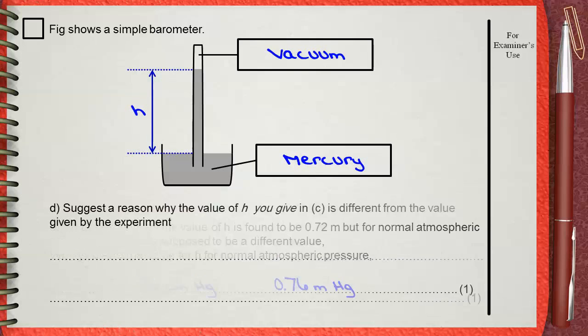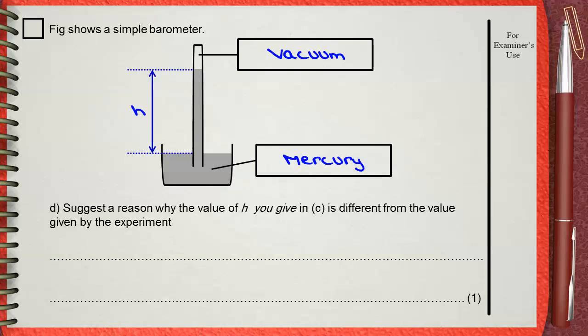Part D: Suggest a reason why the value of H you gave in part C is different from the value given by the experiment.